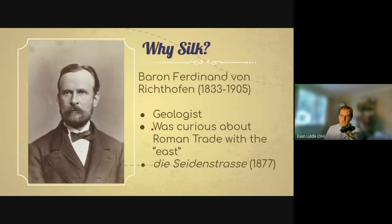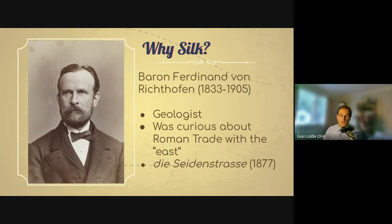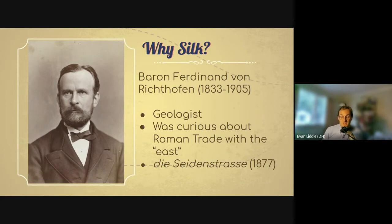So why is it called the Silk Road if so many things were traded on it? A German geologist named Baron Ferdinand von Richthofen studied Roman trade with China and India in the 19th century and was really obsessed with silk. When he formulated the idea of a trade network running from China to Rome — he wasn't the first, but he popularized it — he named it the Seidenstrasse, which literally means 'silk street' or 'silk way.' In English, we call it the Silk Road. It's from one German guy who really liked studying Roman silk trade.